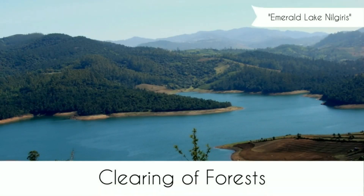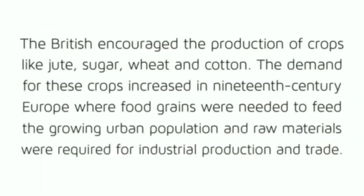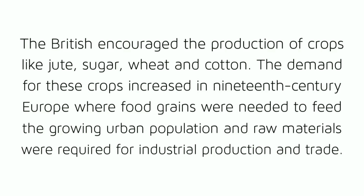Land to be improved. As population increased over the centuries and the demand for food went up, peasants extended the boundaries of cultivation by clearing forests. The British encouraged the production of crops like jute, sugar, wheat and cotton. The demand for these crops increased in 19th century Europe, where food grains were needed to feed the growing urban population and raw materials were required for industrial production and trade.